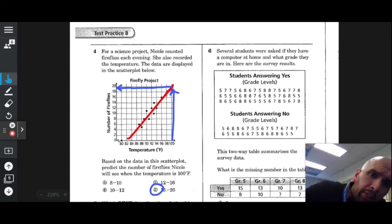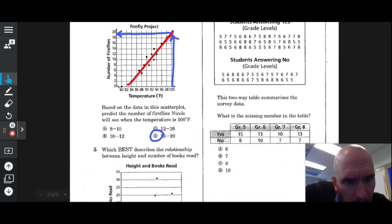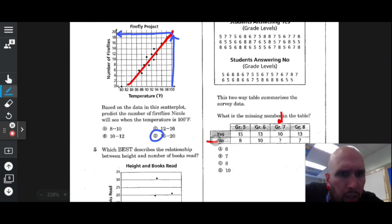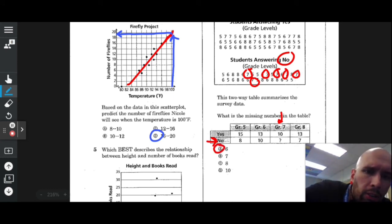Several students were asked if they have a computer at home and what grade they are in. Here are the survey results. The two-way table summarizes the survey data. What is the missing number in the table? We need the number of seventh graders who said no. Let's look at the no column and count how many sevens we see: one, two, three, four, five, six.